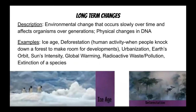Long-term changes are environmental changes that occur slowly over time, affect organisms over generations, and possibly cause physical changes in those organisms' DNA. Examples of long-term changes include the ice age, deforestation, human activity when people knock down a forest to make room for developments, urbanization, Earth's orbits, the sun's intensity, global warming, radioactive waste, pollution, and extinction of species. Because our world is changing, evolving is almost like a natural process — if you don't change with the changing world or evolve with it, eventually you become endangered or extinct.